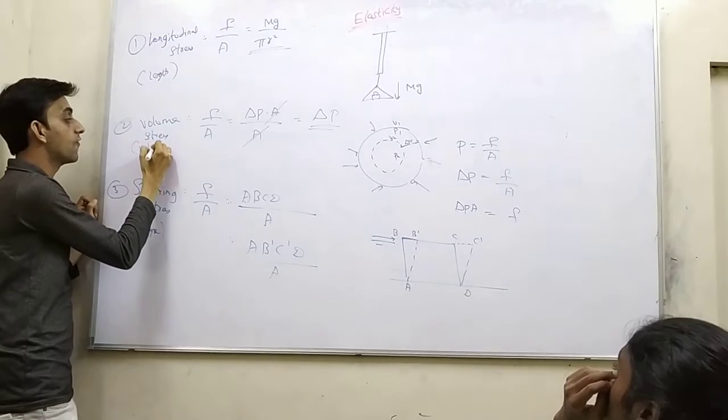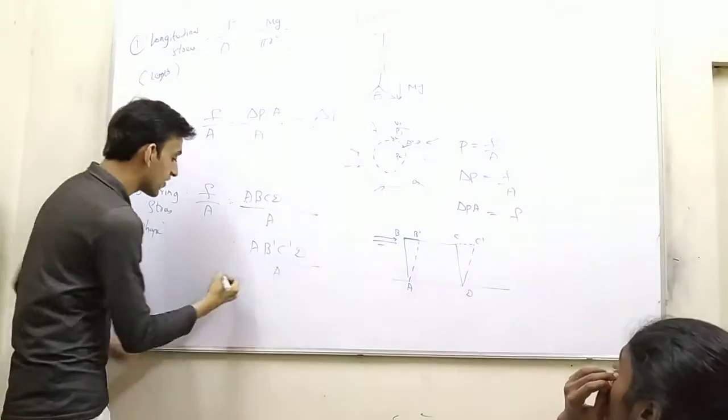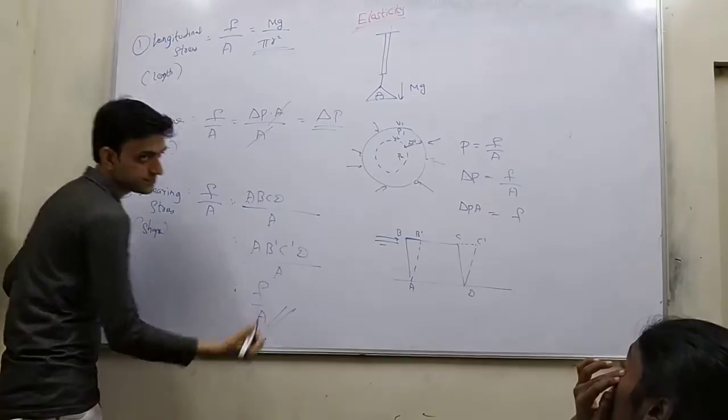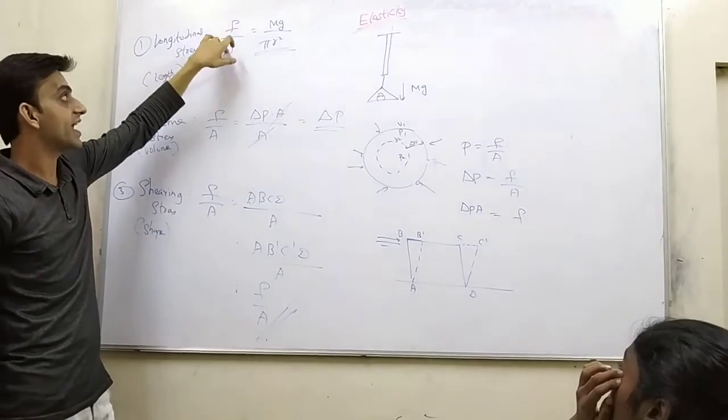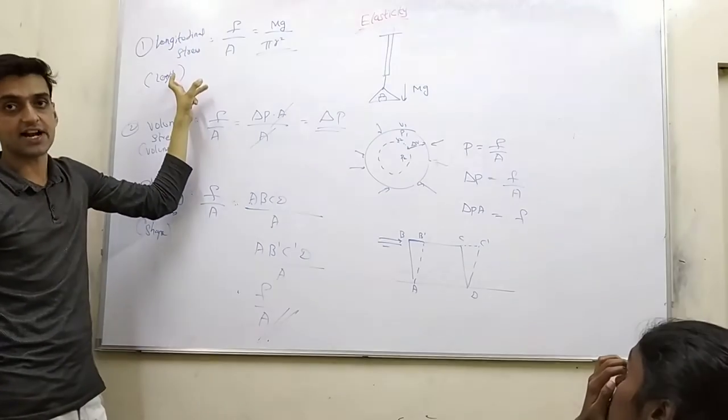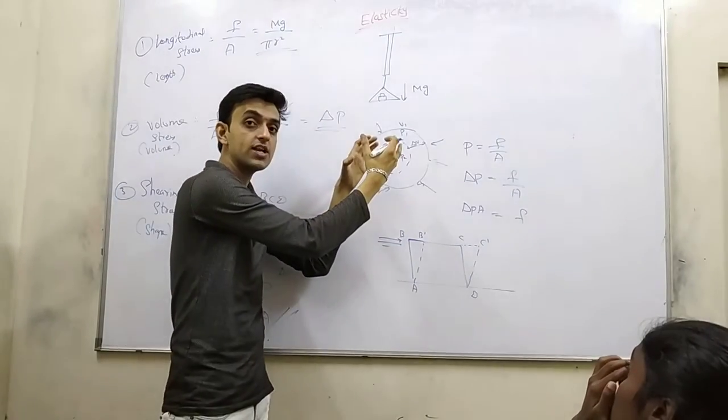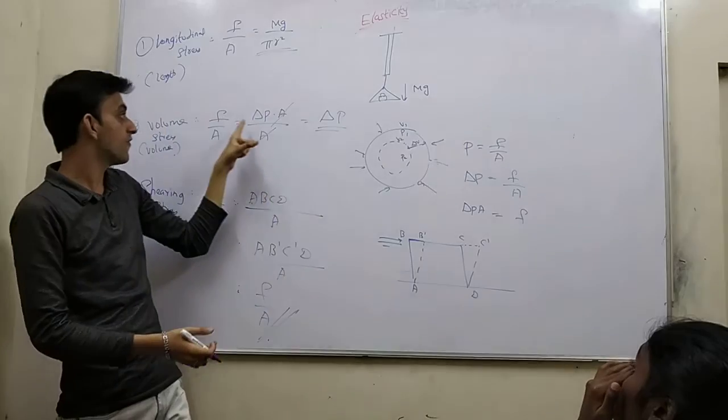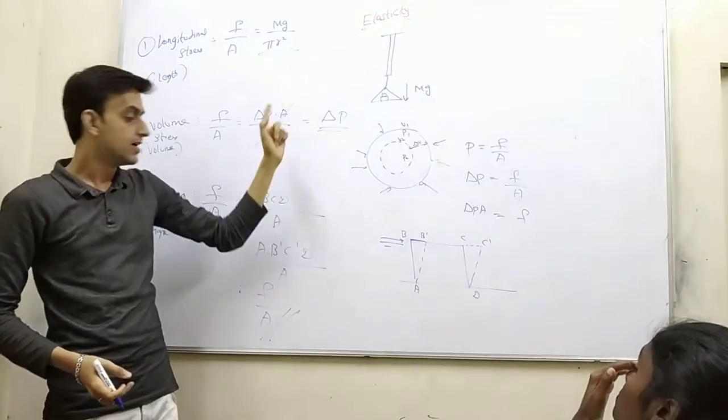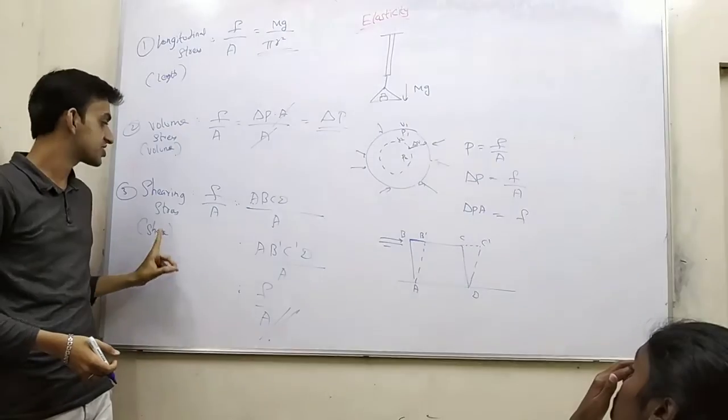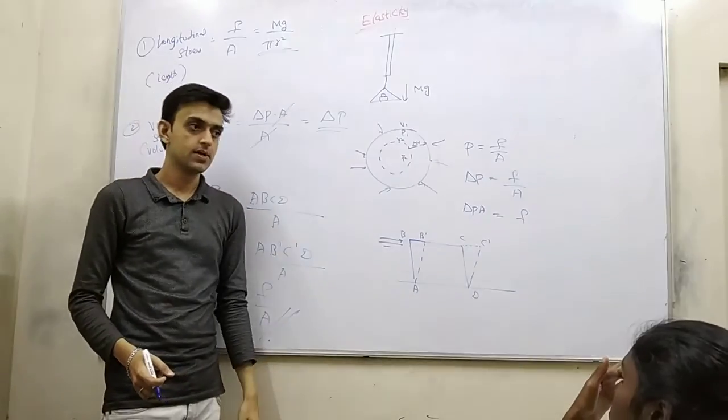This is the shearing stress, the shape changes. This is with regard to volume. So again, the formula is force divided by area. The first one is longitudinal stress, given by mg divided by πr², which is length related. Second is volume stress, the formula is pressure ΔV. The third one is shearing stress, which is shape related. Take care.